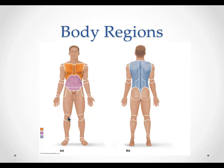The patellar region is the region in front of the knee. On the backside of the body, we have the occipital region, which is the base of the skull. The scapular region is the region around the shoulder blades. The vertebral region runs along the spine. The lumbar region is just the lower back — so if someone has a lumbar puncture, we're talking about a puncture into the membrane around the spinal cord in that region. The sacral region is the triangular region between the hips at the top of the buttocks.